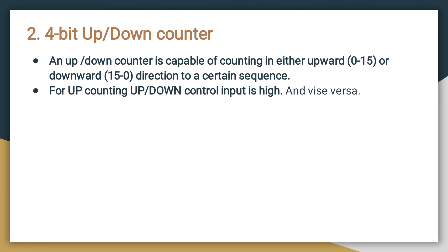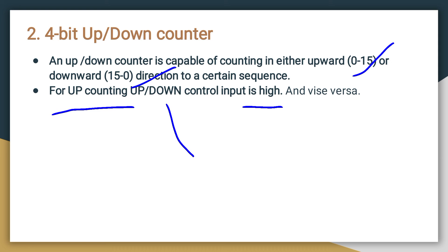Next is the synchronous counter — the four-bit up-down counter. Here we can count upward from 0 to 15 or downward from 15 to 0. If you want up-counting, the control input is set high; for down-counting, it is set low.